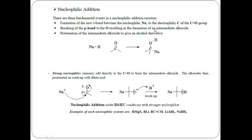During this nucleophilic attack on the electron-poor carbon, one of the double bonds of the carbonyl functional group is broken and a new bond forms with a hydrogen atom, resulting in formation of an alcohol derivative. Strong nucleophiles — anions — add directly to the carbonyl functional group to form an intermediate alkoxide, which is then protonated with a dilute acid.